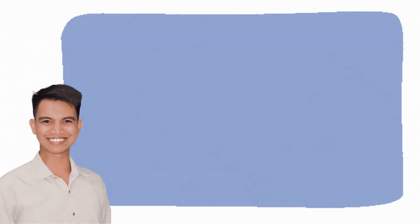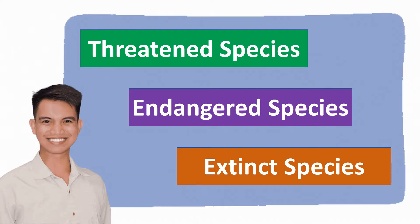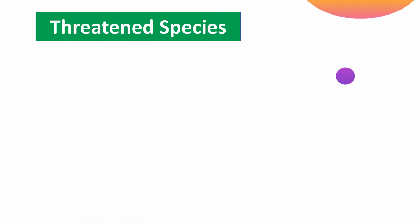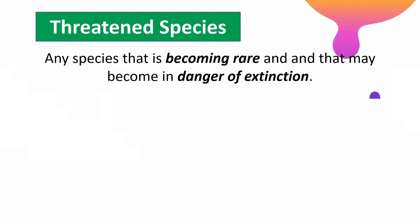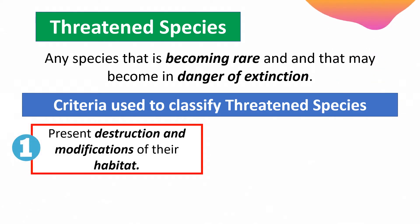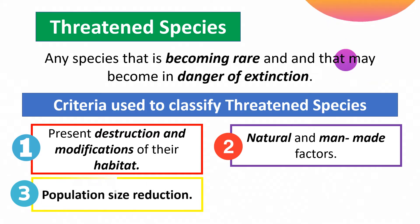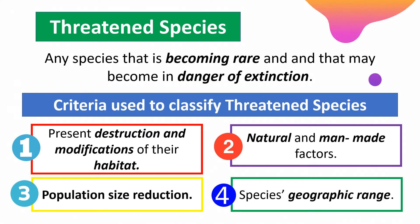Organism species may either be threatened, endangered, or extinct, and we will talk about each one. Threatened species refers to any species of either plants or animals that is in danger of extinction. There are criteria used to classify whether species are threatened: first, habitat destruction or modifications; second, natural or man-made factors that may affect their extinction; third, population size reduction; and fourth, the distribution of each species based on geographic range.